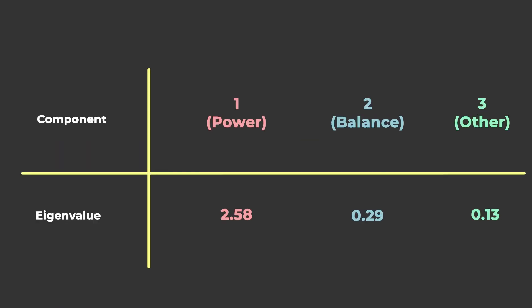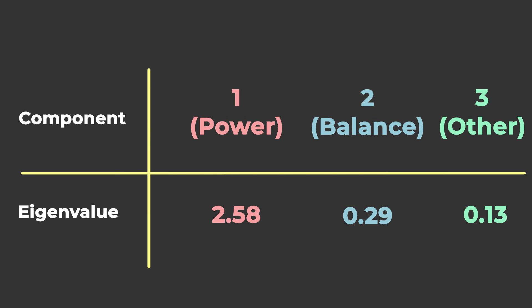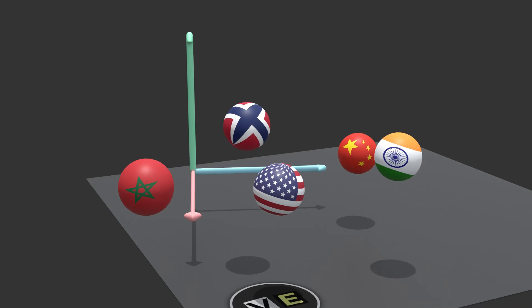For our case, we see that PCA suggests to look mostly at the power component, and only look at balance for a more refined analysis or to compare countries of comparable power. In fact, we can make things even more precise. If we divide all the eigenvalues by their sum, we see that the component power explains about 85% of the data, while balance explains about 10% of the data, and the third component explains the remaining 5%.